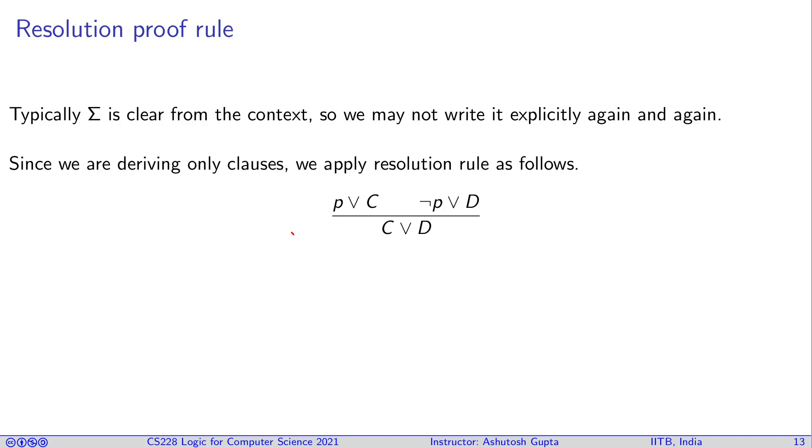So usually the resolution is written like this: where you say p or c and not p or d are given to you. These are called clauses, antecedents, and the resolution is c or d. So this is called resolvent. And this variable p where you expect p and not p both occur in the clauses respectively, that is called pivot variable.